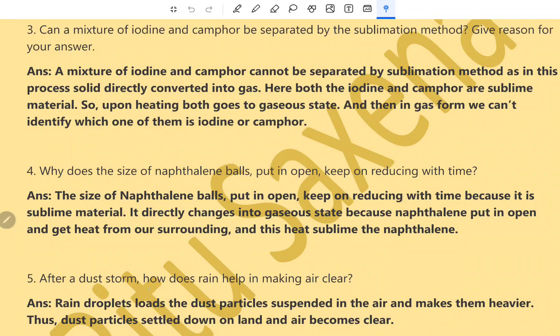After a dust storm, how does rain help in making air clear? Raindrops loads the dust particles suspended in the air and makes them heavier. Thus, dust particles settles down on land and air becomes clearer and cleaner.